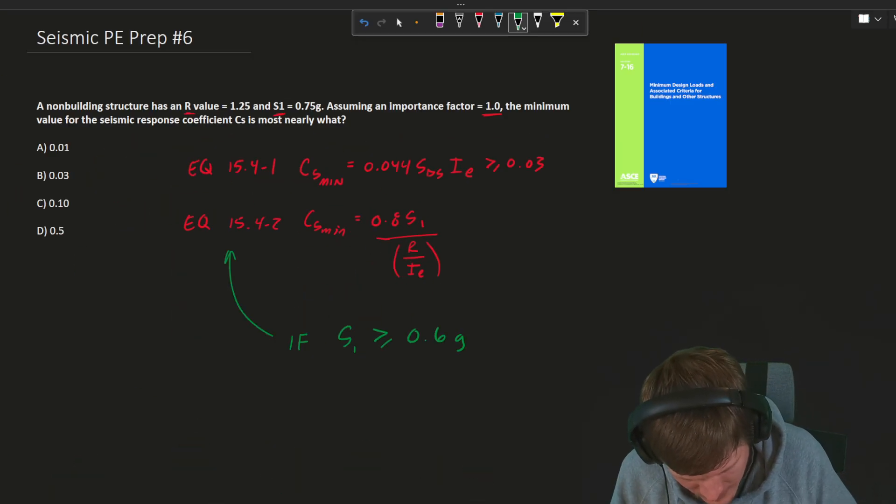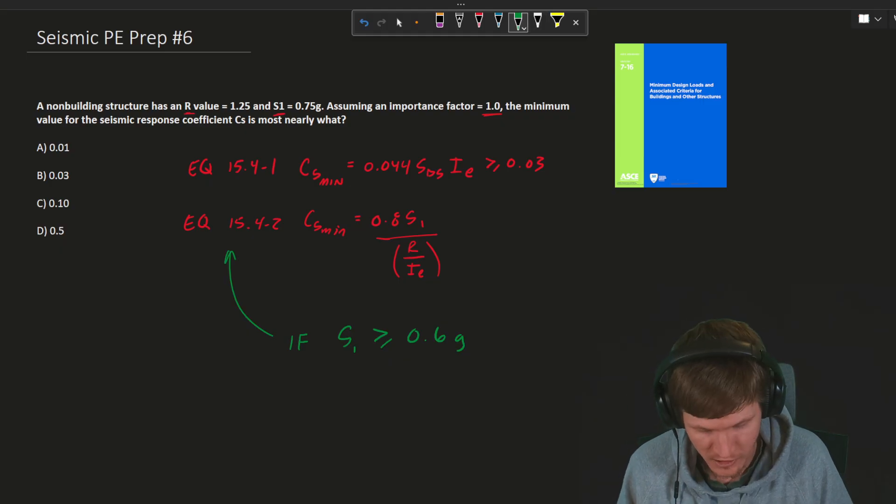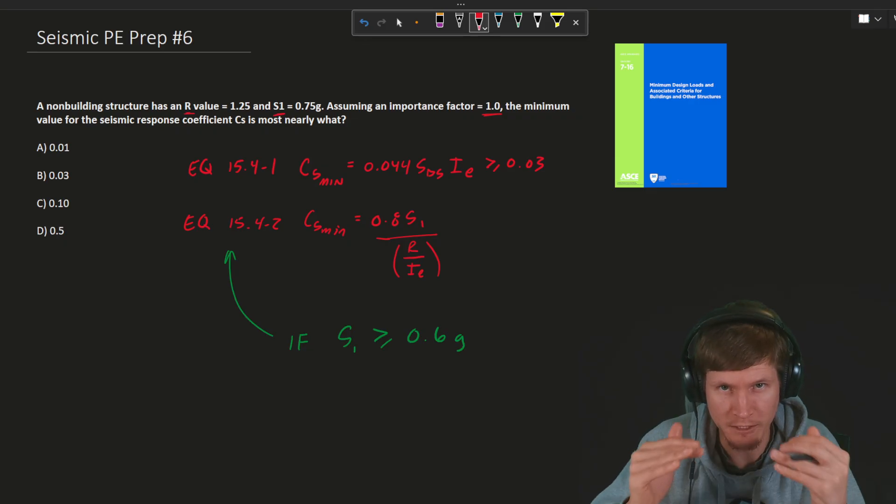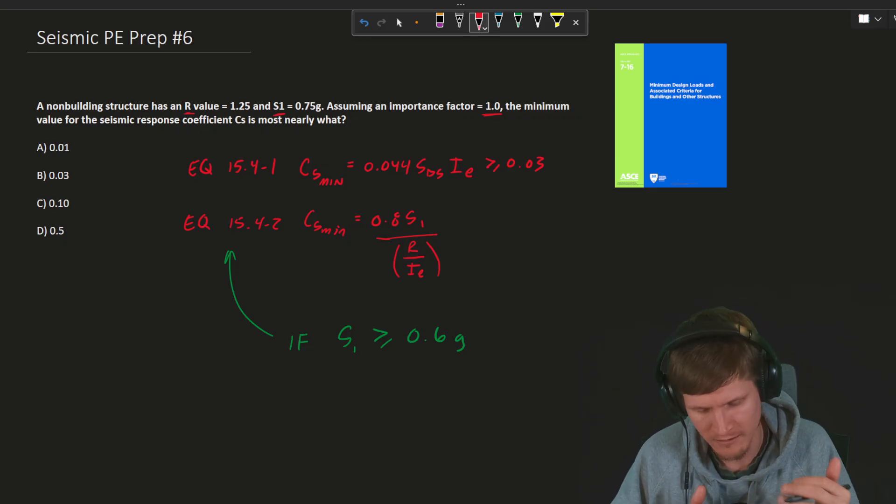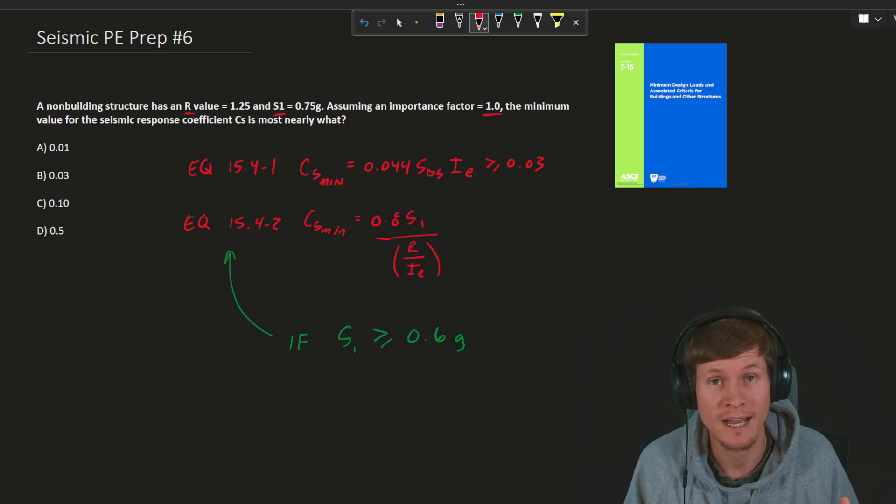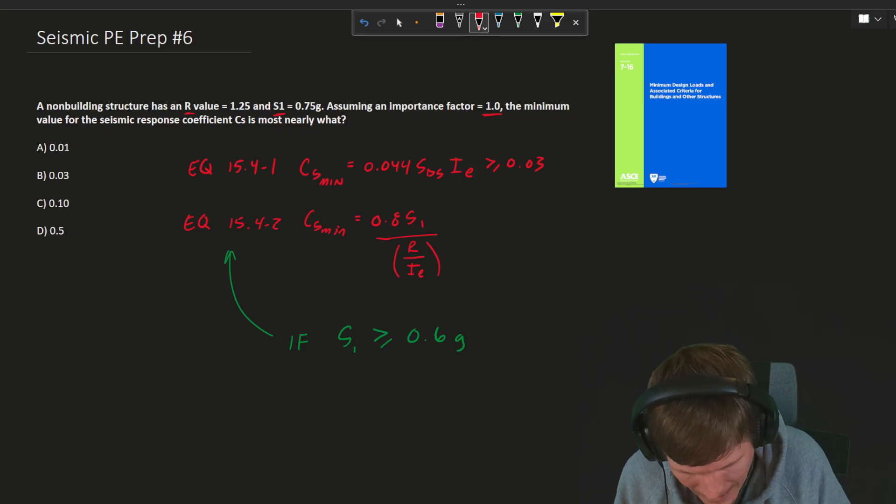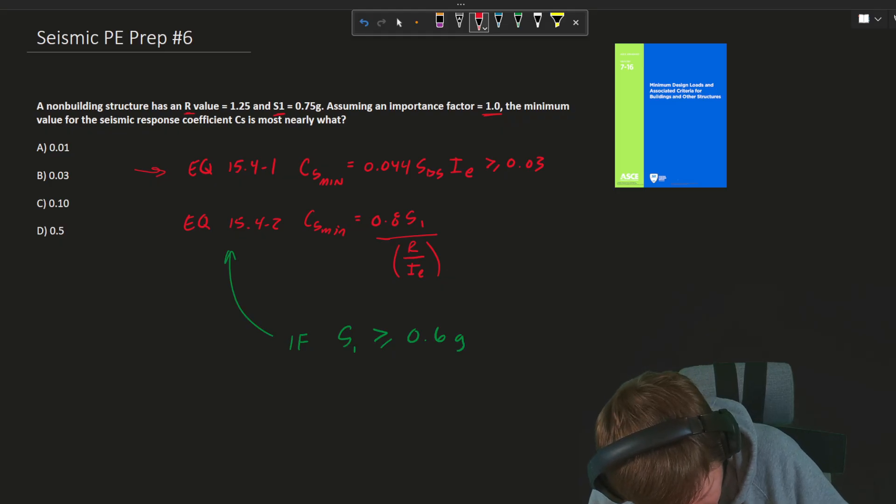We have our two equations written out and we know that equation 15.4-2 is only applicable for non-building structures in locations where S sub one is greater than 0.6 G. If you didn't see the gotcha right off the bat and you just moved linearly through and said, let me try this equation, then let me try the next equation, whatever yields me my lowest value I will use for my final answer. That's an absolutely applicable way to go about this.